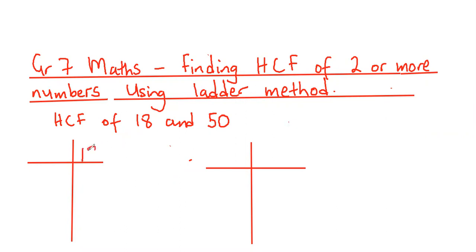I'm going to start with 18. We divide 18 by the smallest possible prime factor that does not leave a remainder, and this is 2. So 2 into 18, that's 9.